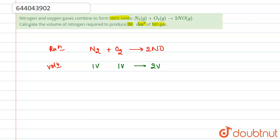Now if we talk about the question, it is saying calculate the volume of nitrogen required to produce 30 dm³ of NO gas.